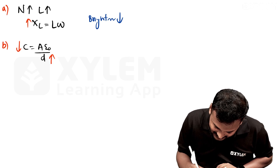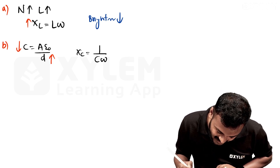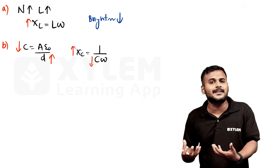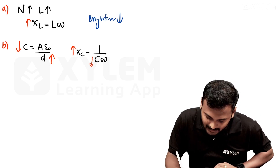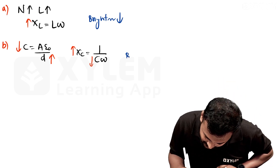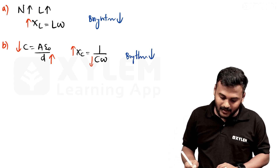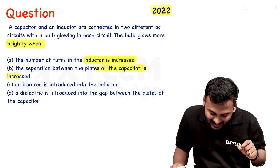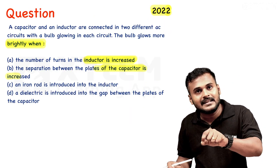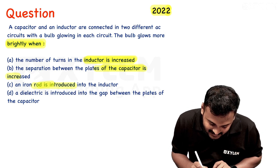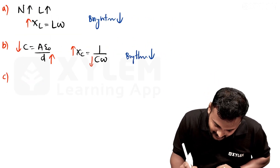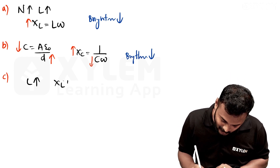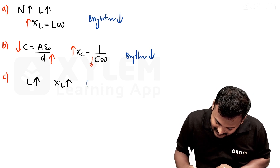If capacitance decreases, XC equals 1/(C·ω) increases, so current decreases and brightness decreases. Option C: an iron rod is introduced into the inductor. This increases inductance L, so XL increases, current decreases, and brightness decreases. So options A, B, and C all reduce brightness.